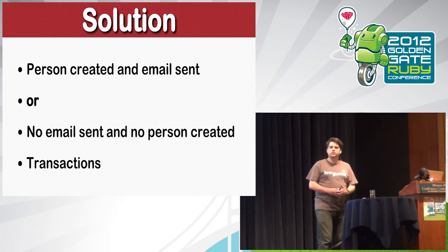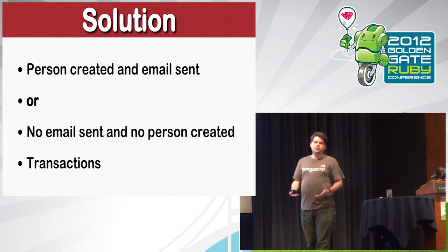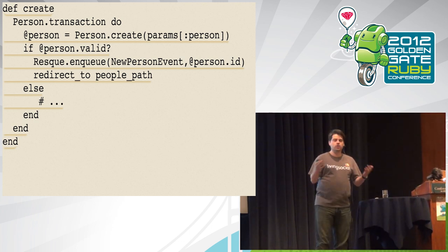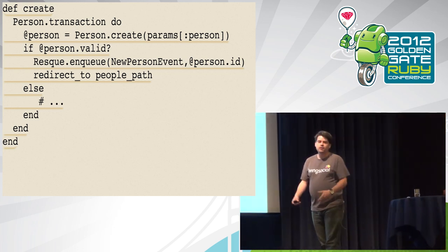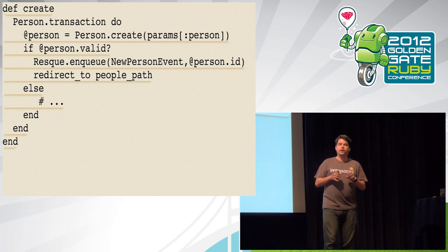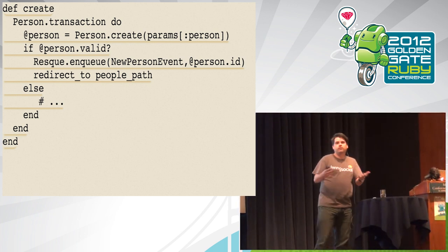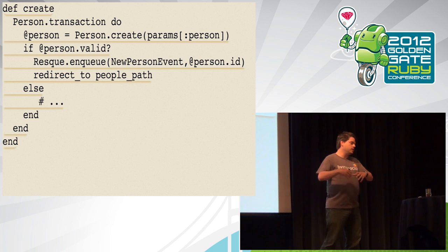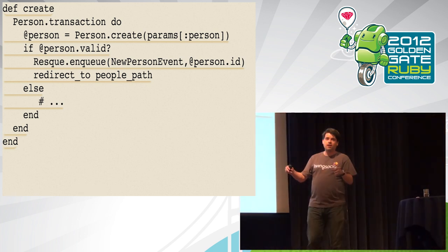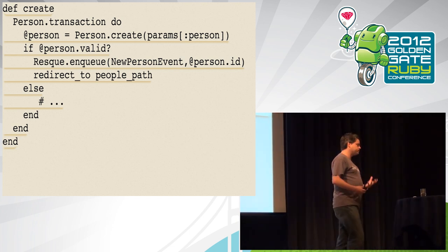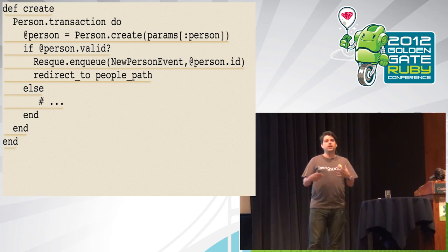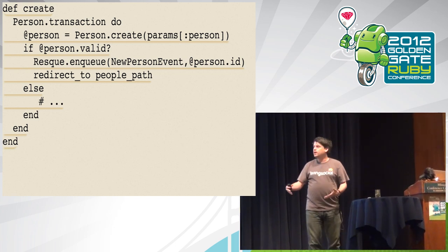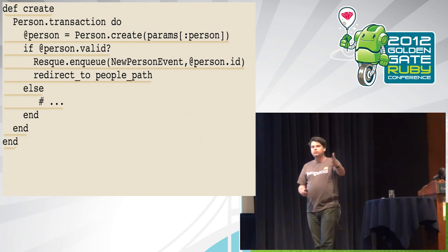We'll use database transactions for this. Person is an ActiveRecord class with a transaction method that takes a block — if anything goes wrong in that block, all database operations are undone. If person create fails, okay, that failed. If person create succeeds but we have any failure enqueuing the job to Resque, then the entire person will not be created and their email address will not be saved. The user still has to deal with a 500 error and resubmit, but at least they can fix it. We don't have to go into console to take manual steps. If we continue getting these timeouts, we have a new problem, but we're at least making things better.